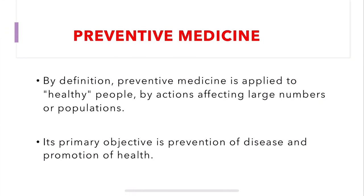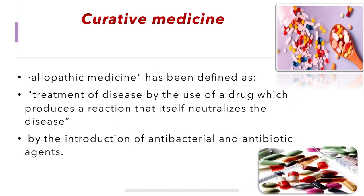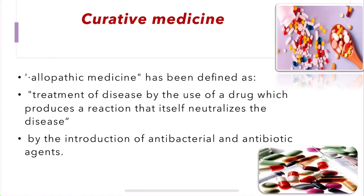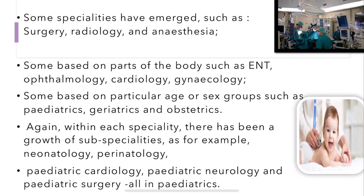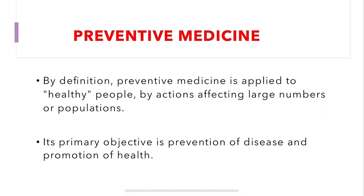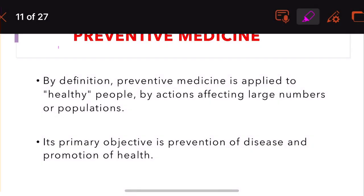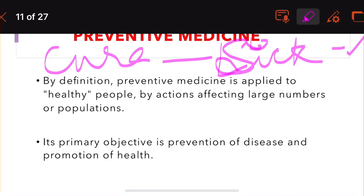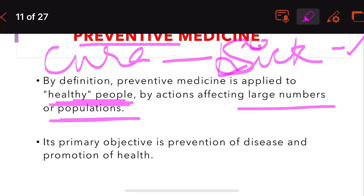So to summarize curative medicine: it deals with the particular person and not the mass, you define allopathic medicine, and you write about the specialties that have emerged. Moving on to preventive medicine — preventive medicine is applied to healthy people. In curative medicine you deal with the sick person doing diagnosis and treatment, whereas in preventive medicine you deal with healthy people and also large numbers of populations.